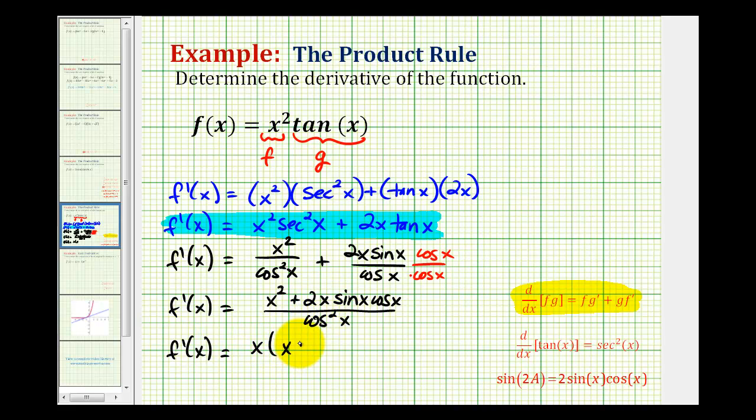So we'd have x times x plus two sine x cosine x, again all over cosine squared x. So this does seem like a lot of work, but in this form there is a trig substitution that we could do. Two sine x cosine x is equal to sine two x.